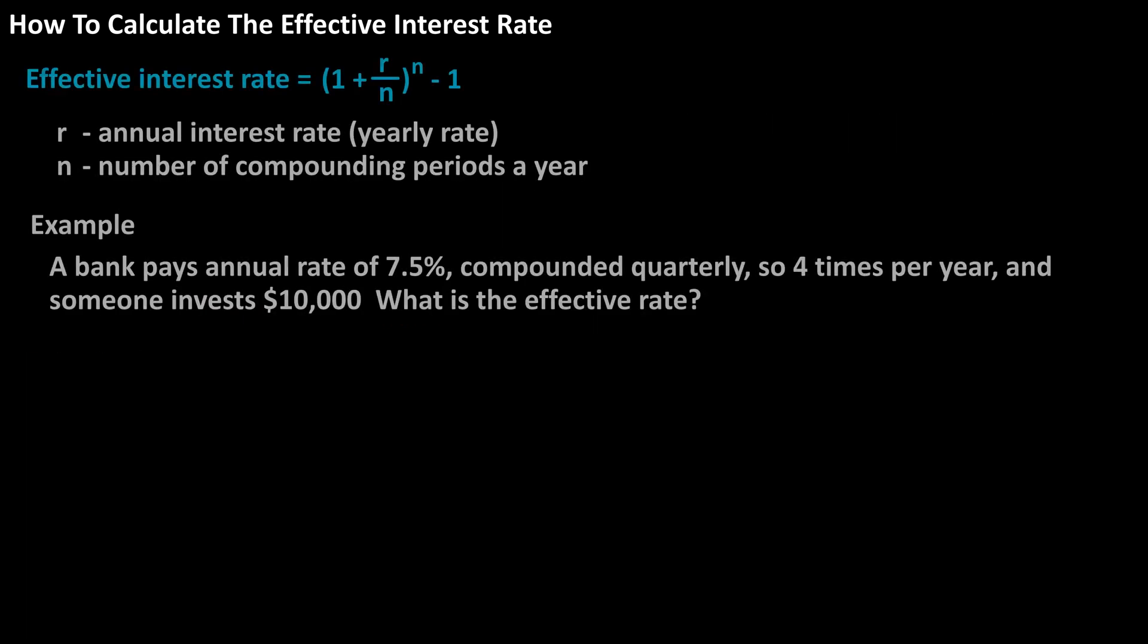As an example, if a bank pays an annual interest rate of 7.5% that compounds quarterly, so 4 times per year, and someone invests $10,000 into that account, what is the effective annual interest rate?